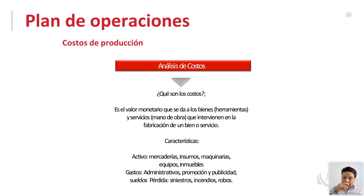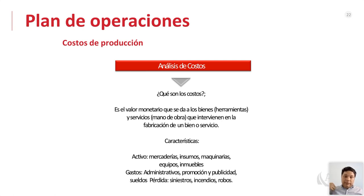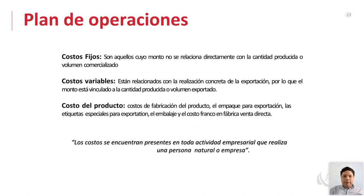Los activos tienen que ver directamente con el producto en sí, y los gastos no son directamente del core del negocio. Por ejemplo, contratar a un vigilante de seguridad es un gasto, no un costo directo. Promoción, publicidad, el sueldo del personal, y pólizas de seguros son también gastos. Dentro del plan de operaciones vemos costos fijos, costos variables y costos del producto, que son importantes tenerlos en cuenta.